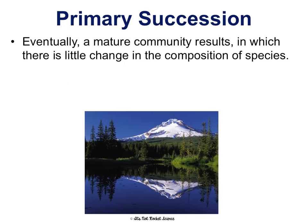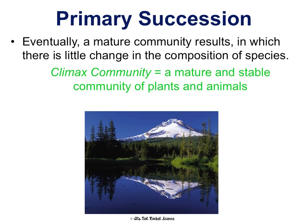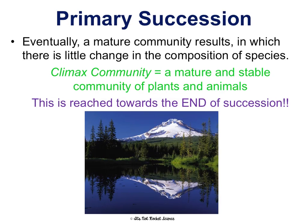Eventually, a mature community is going to result in which there's little change in the composition of species — no drastic changes. We call this a climax community: a mature and stable community of plants and animals that are pretty developed with relatively predictable changes. The climax community is towards the end of succession. Think of a movie — the climax, the most mature and intense part, always builds up until the end of the story. So the climax community is at the end of succession.